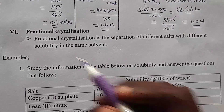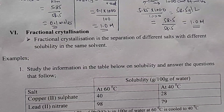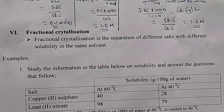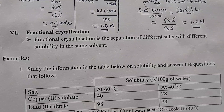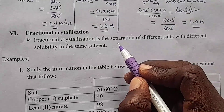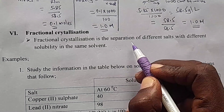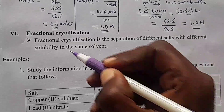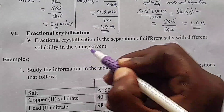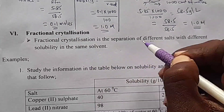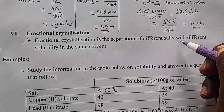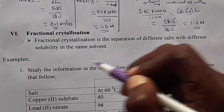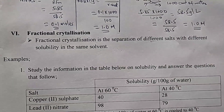Next, Romeo 6: fractional crystallization. Fractional crystallization is a method of separation of different salts with different solubility in the same solvent.